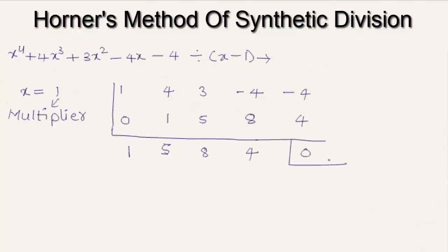The last entry in the third row stands for the remainder, while the first four elements stand for the coefficients of descending powers of x of the quotient. So we get the quotient as x^3 + 5x^2 + 8x + 4.